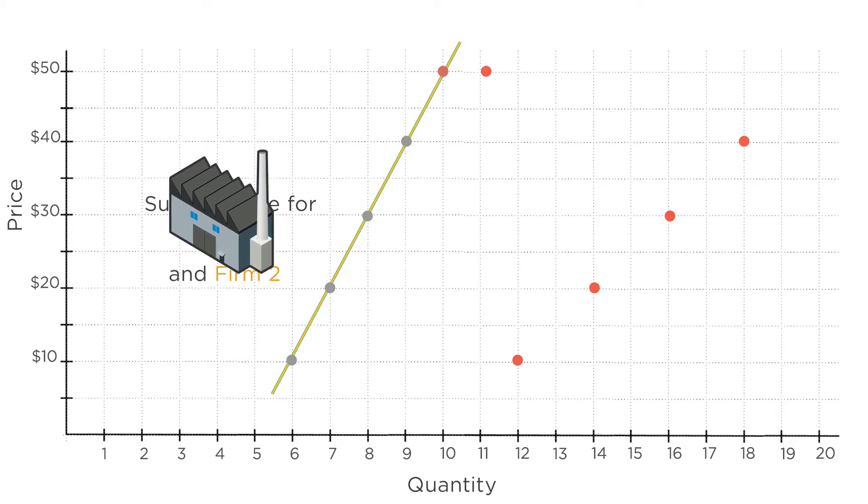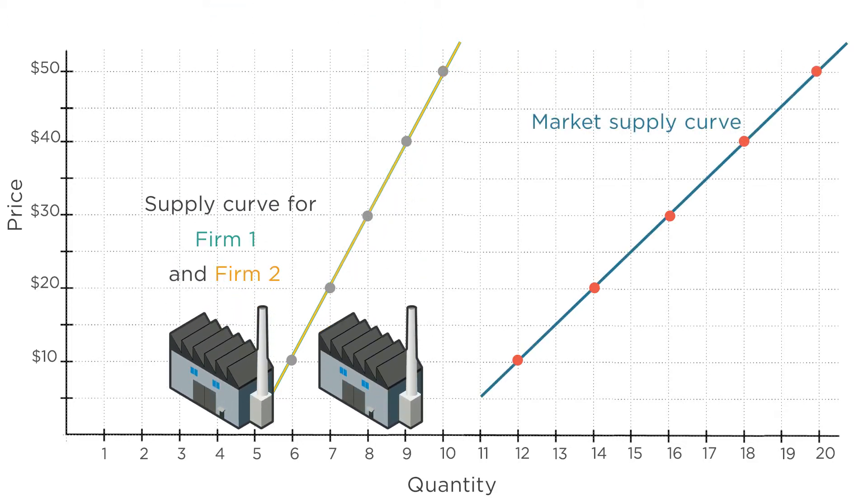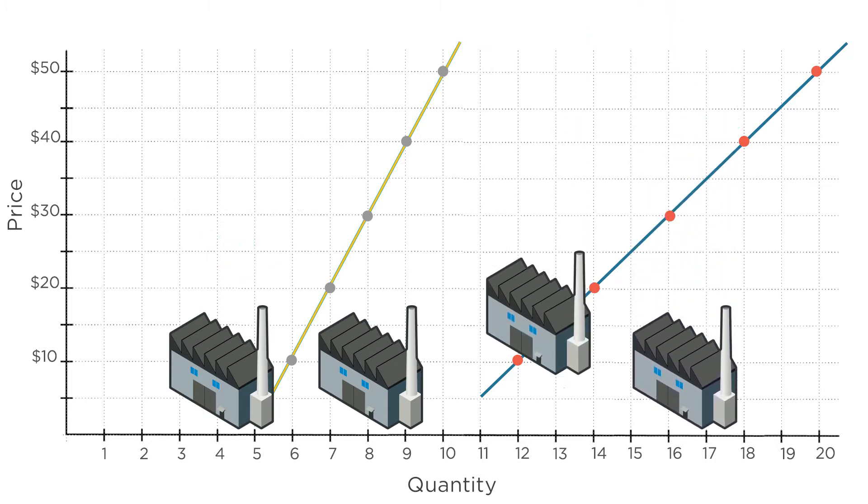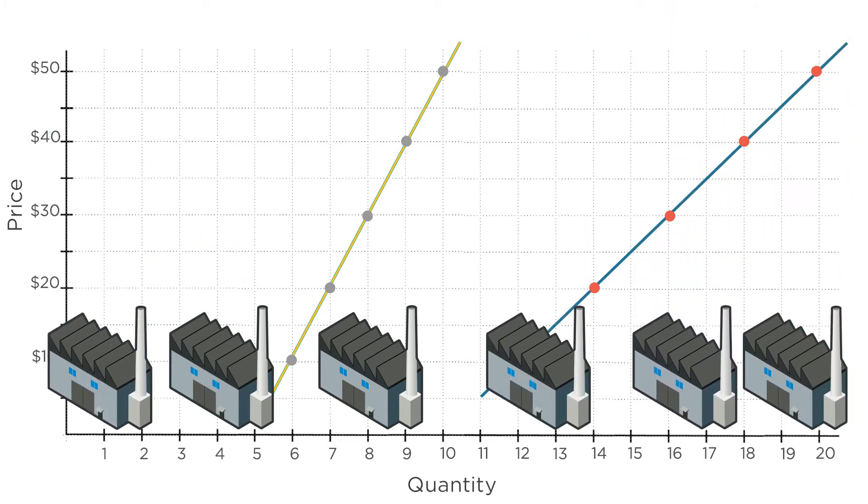That is, we took the number of firms in the market to be fixed in the short run. But in the long run, the number of firms isn't fixed. New firms can enter the market and existing ones can leave. To understand long run supply, we'll need to understand these entry and exit decisions.